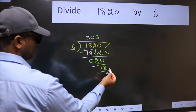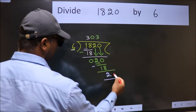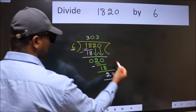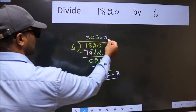No more numbers to bring down. So, we stop here. This is our remainder and this is our quotient.